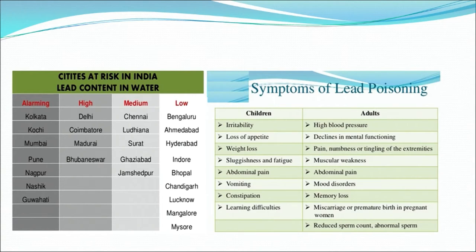The figure also shows symptoms of lead poisoning in children and adults. In children: irritability, loss of appetite, weight loss, sluggishness and fatigue, abdominal pain, vomiting, constipation, and learning difficulties. In adults: high blood pressure, decline of mental functioning, pain, numbness or tingling of the extremities, muscular weakness, abdominal pain, mood disorder, and memory loss.